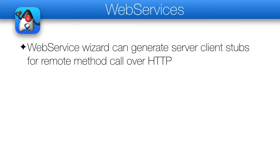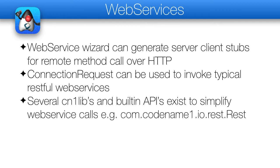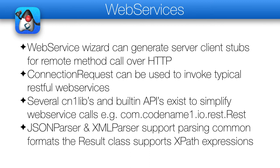Web services can be implemented in many ways in Codename One. A common approach is the web service wizard detailed in the developer guide — it generates method calls that map to server code and allow a remote function invocation on the server. You can use ConnectionRequest to invoke REST APIs from the client, or use one of the third-party or built-in APIs. We have great APIs such as the REST API that lets you invoke server code with almost no effort. You can use the built-in JSON and XML parsers as well as the Result class for XPath expression-style parsing, or use third-party parsers from the cn1lib section.